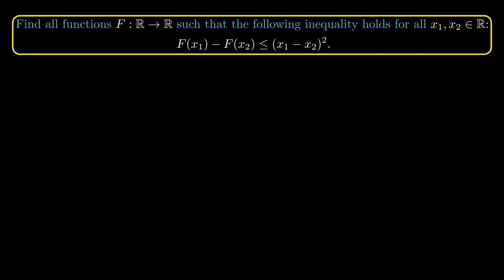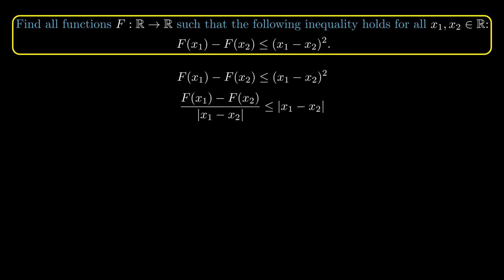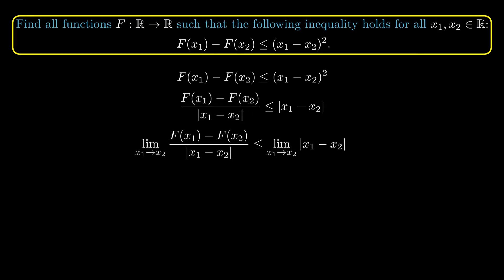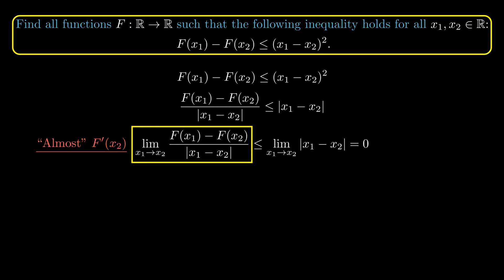For this problem, the key observation is that we can make the left-hand side look like a slope expression. We divide both sides by |x_1 - x_2|, which is non-negative, so we don't have to worry about sign changes. The left-hand side then becomes quite familiar. Taking the limit as x_1 approaches x_2, the right-hand side goes to zero, and the left-hand side is almost the derivative of f at x_2 by the limit definition of the derivative.